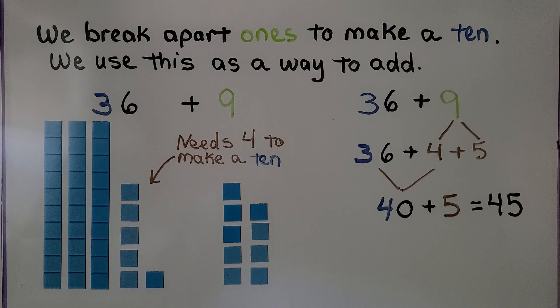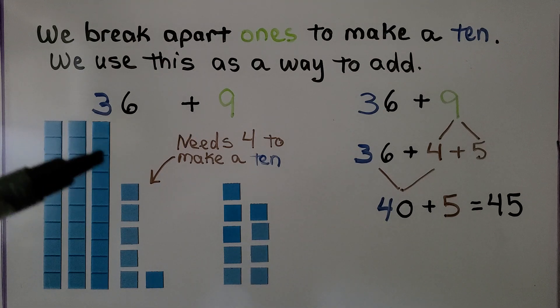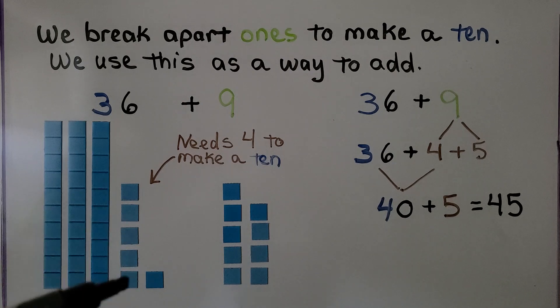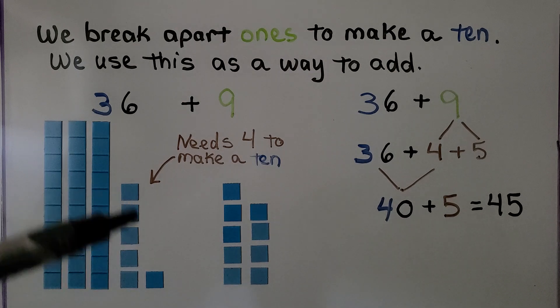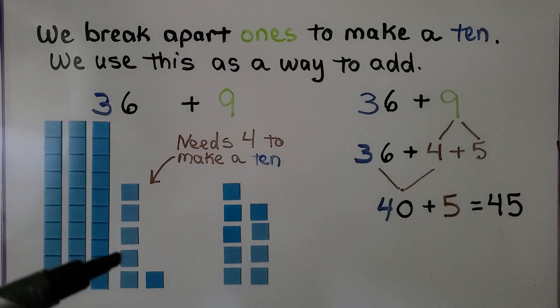We break apart ones to make a ten. We use this as a way to add. We're going to add 36 plus 9. We have 3 tens, 6 ones. We ask ourselves, what do these 6 ones need to make a ten? It needs 4 more.